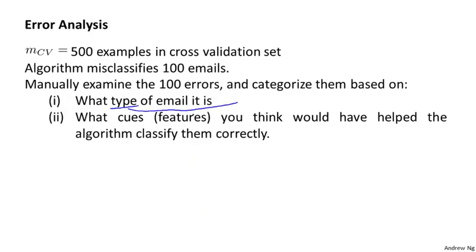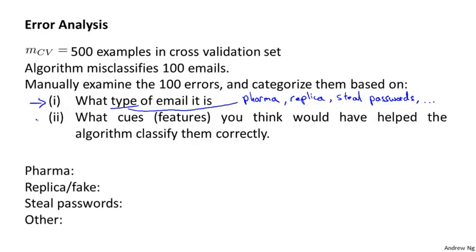Specifically, by what type of email it is — if I look through these 100 errors, I might find that the most common types of spam emails it misclassifies are maybe emails on pharmacies, basically emails trying to sell drugs; emails trying to sell replicas like fake watches; emails trying to steal passwords, also called phishing emails; and other categories. I would go through and count up: maybe 12 of the mislabeled emails are pharma emails, four are trying to sell replicas, 53 are phishing emails trying to persuade you to give them your password, and 31 are other types.